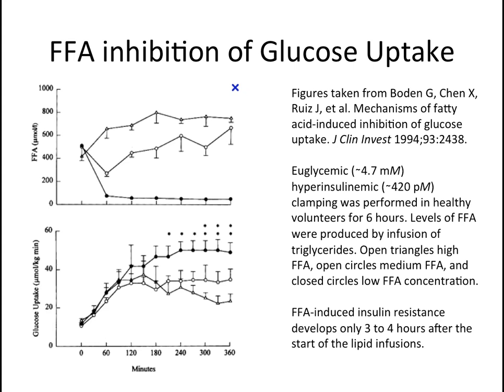The figures on this slide were taken from a paper published in the Journal of Clinical Investigation, and show the results of an experiment that tested the effect of plasma free fatty acids, or FFAs, on glucose uptake. In healthy volunteers, researchers injected triglyceride emulsions at three different concentrations — low, medium, or high — and measured whole body glucose uptake over six hours. The top graph monitors plasma FFA concentrations over time, while the bottom graph monitors glucose uptake over time. Closed circles represent low FFA concentration, open circles medium, and open triangles high concentration. Glucose uptake is clearly inhibited by high levels of plasma FFAs, represented by the open triangles, and this inhibition becomes statistically significant at three and a half hours after the infusion of fat.